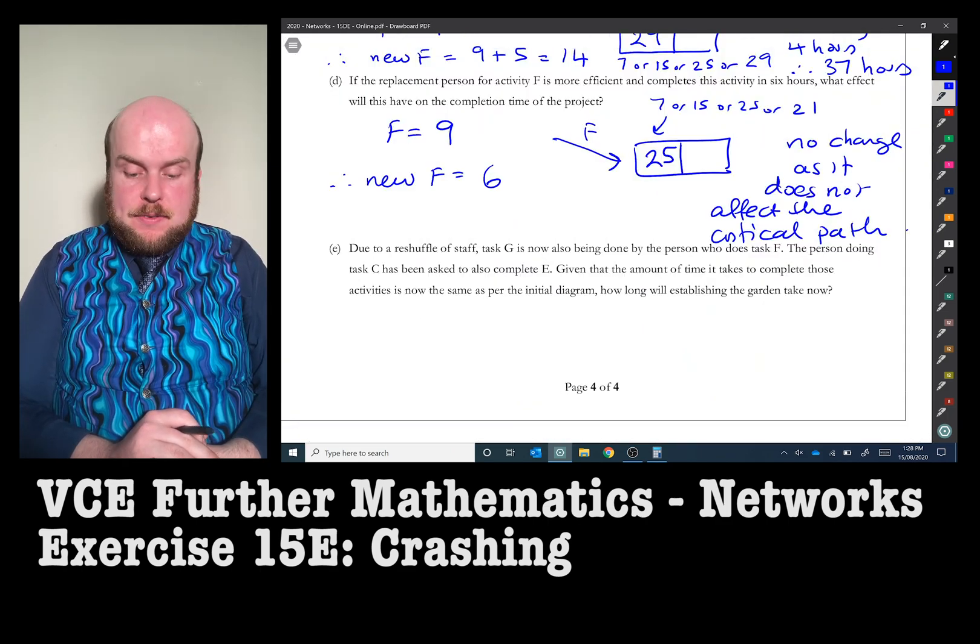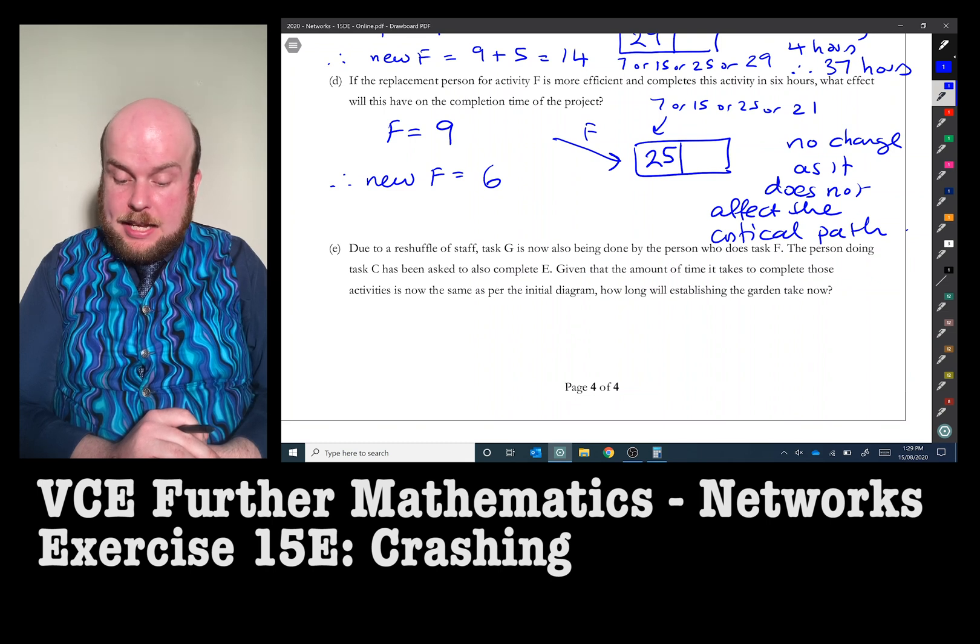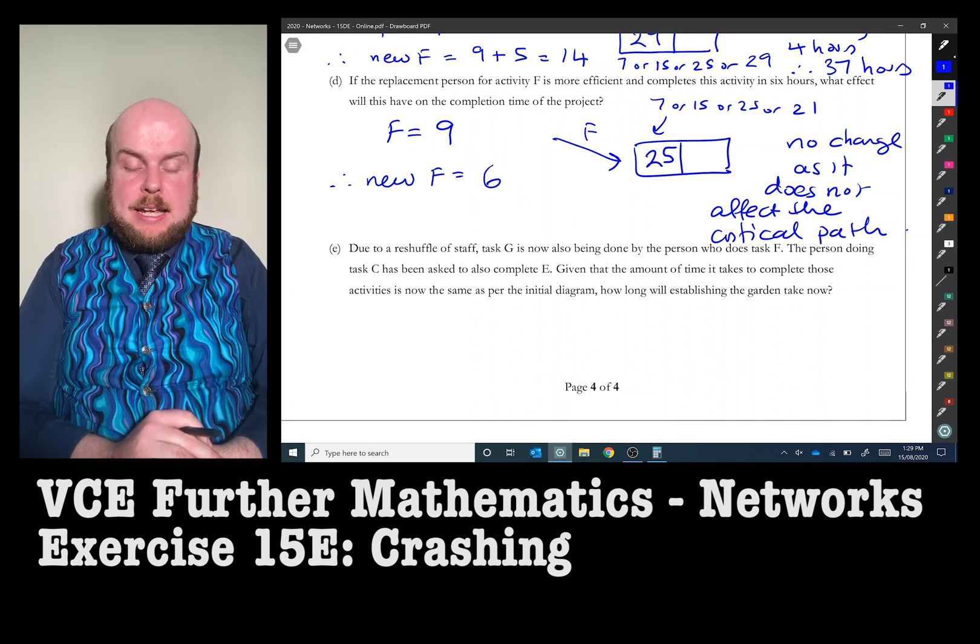Part E: Due to a reshuffle of staff, task G is now also being done by the person who does task F. The person doing task C has been asked to also complete task E. Given that the amount of time that it takes to complete this activity is now the same as per the initial diagram, how long will establishing the garden take now?